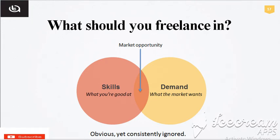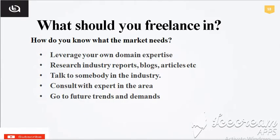Assalamu alaikum, welcome to Part 2 of the short introduction to freelancing. Basically there are two circles you are watching on your screen. The first circle shows skills — what you are good at. The second circle shows demand — what the market wants, what type of things are demanded. You have to find the matching between these two circles and fill the gap to find market opportunity to build your career in freelancing.